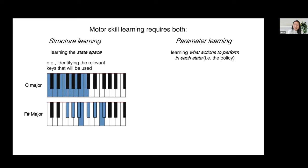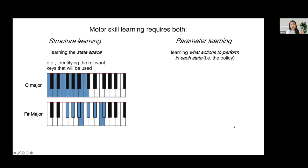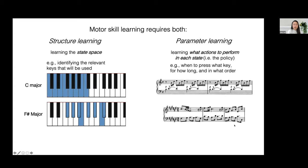You can think of the relevant state space of the task as being the specific set of keys used in any particular song you're playing. So if I'm playing a song in C major, these would be the set of keys I'd be using, as opposed to a song in F sharp major. And once I know the set of states — the keys relevant for the particular song — I can learn the parameters of the song, which include when to press what key, for how long, and in what order.